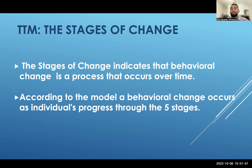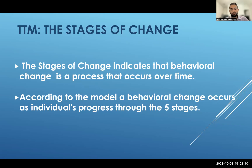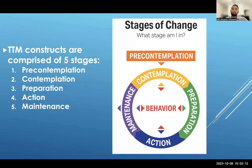The model indicates that behavioral change is a process that occurs over time. According to the model, behavioral change occurs as individuals progress through five stages. Each stage represents a different level of readiness and motivation for an individual. The five constructs that make up the model are pre-contemplation, contemplation, preparation, action, and maintenance.